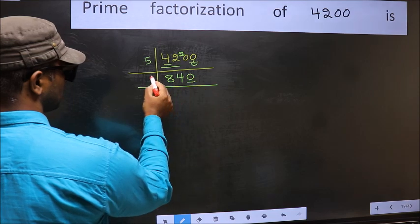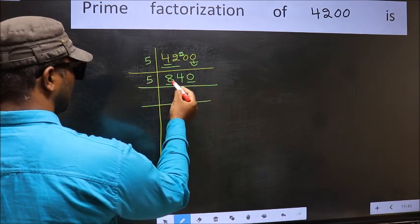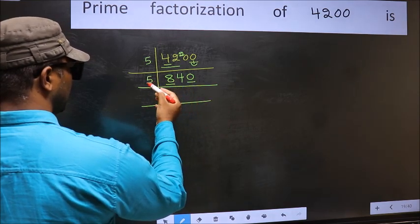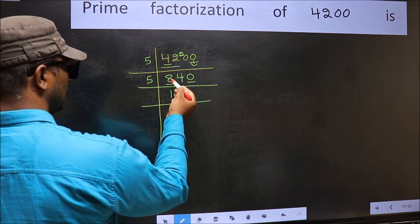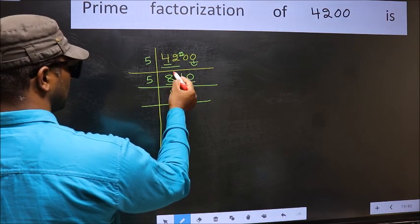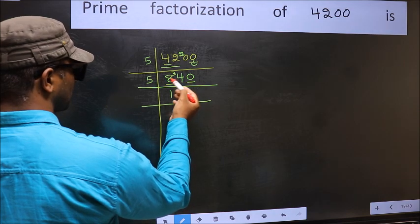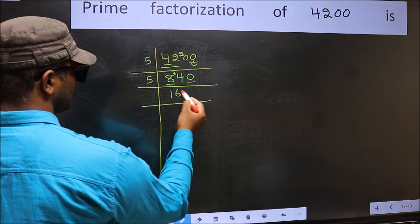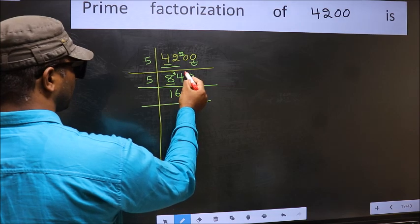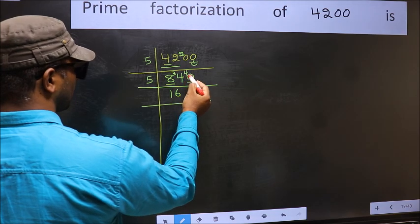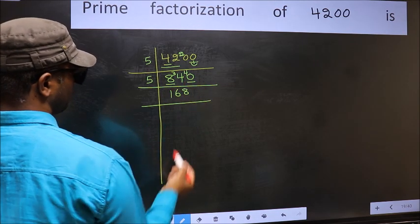Now the last digit is 0, so take 5 again. First number 8. A number close to 8 in the 5 table is 5 once = 5. 8 minus 5 = 3, carried forward: 34. A number close to 34 in the 5 table is 5 sixes = 30. 34 minus 30 = 4, carried forward: 40. When do we get 40 in the 5 table? 5 eights = 40.